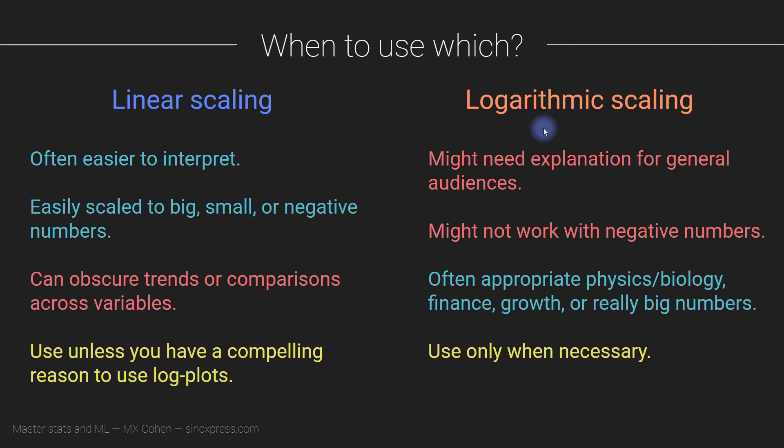Linear scaling is also easily scaled to big numbers or small numbers or negative numbers. Logarithmic scaling, depending on how you set things up, often don't even work with negative numbers. You might need to translate the data, apply some kind of transformation to the data in order to work with a negative y-axis. Linear scaling can obscure trends or comparisons across variables. That's really just the case if those variables grow very fast or if they grow to be very small. Logarithmic scaling tends to be most appropriate for physics and biology, finance or growth, or not necessarily really big numbers per se, but when you have really big differences between numbers. When you have functions or data that really span multiple different orders of magnitude, they really span a lot of different scales, then logarithmic scaling tends to be more appropriate than linear scaling.